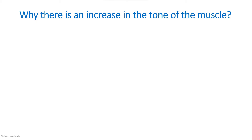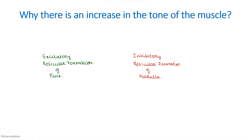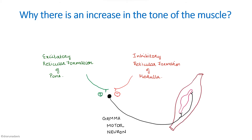The next question is: why is there an increase in the tone of the muscle? Tone is a function of the gamma motor neuron — if it discharges more, there will be increased tone. In the reticular formation, we have an excitatory reticular formation in the pons and an inhibitory reticular formation in the medulla. Both of these excite and inhibit the gamma motor neuron of these muscles.